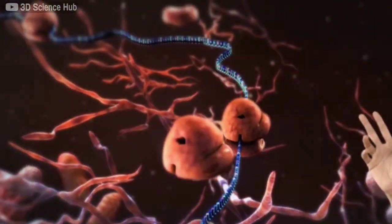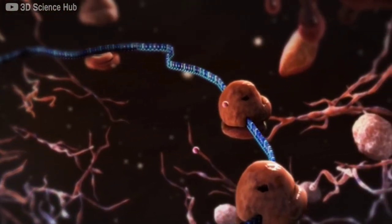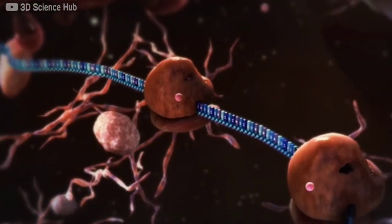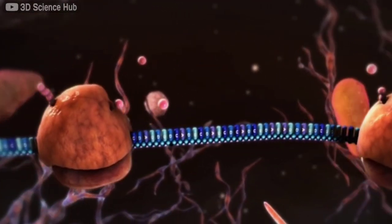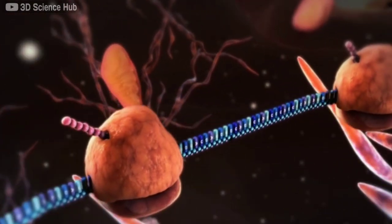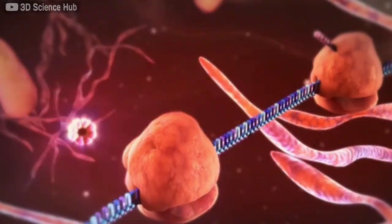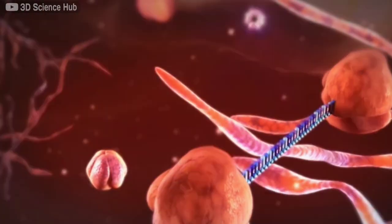During G2, the cell finishes the preparations to enter the M phase or mitosis. These preparations include the synthesis of proteins and further cell growth. In this phase, the amount of DNA remains doubled and the number of chromosomes remain unchanged.